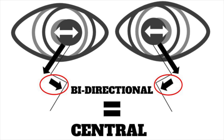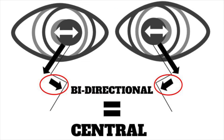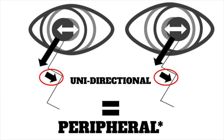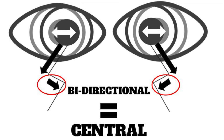So what have we learned so far? Purely vertical is always central. Purely rotational is always central. Unidirectional — fast component always in the same direction — is virtually always peripheral. And multidirectional is virtually always central.